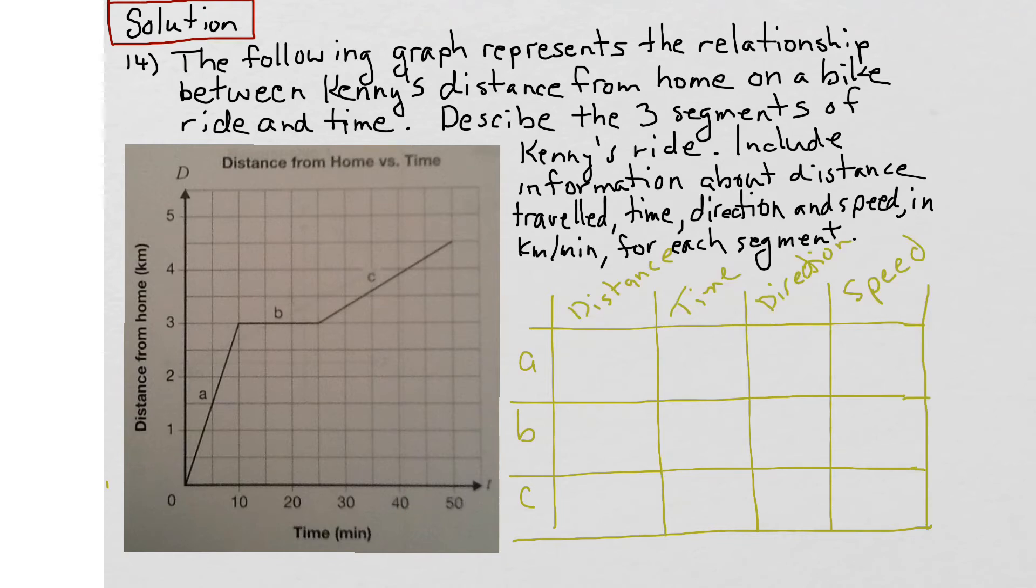Let's look at segment A. Kenny started at home and then he traveled going up along the distance axis here, a total of three kilometers. How long did it take him to do that? If we look at the horizontal axis here, as he went up this three kilometers, it took him ten minutes to do it.